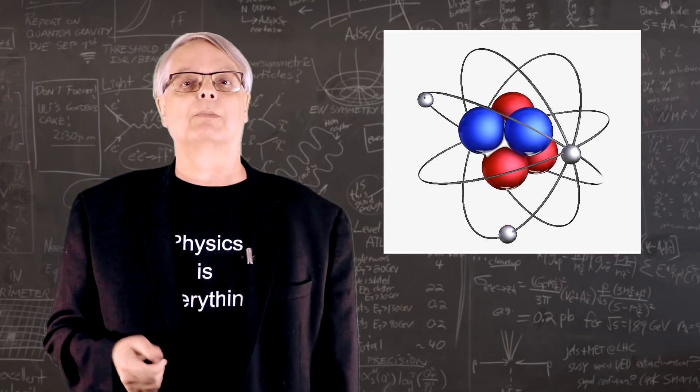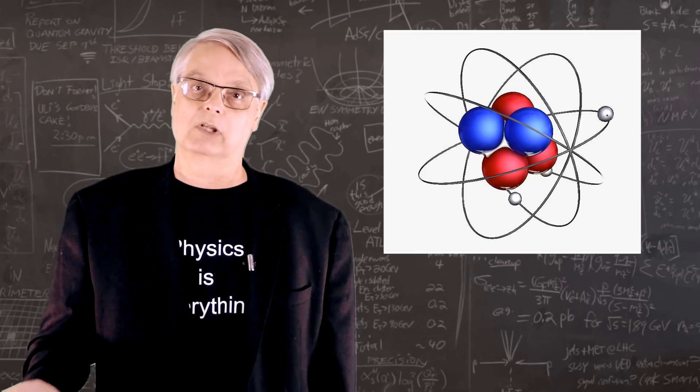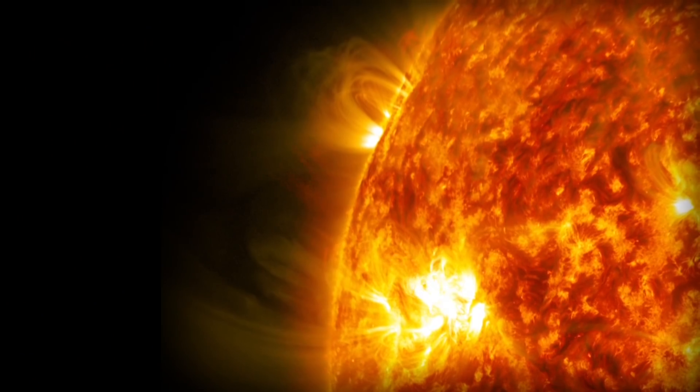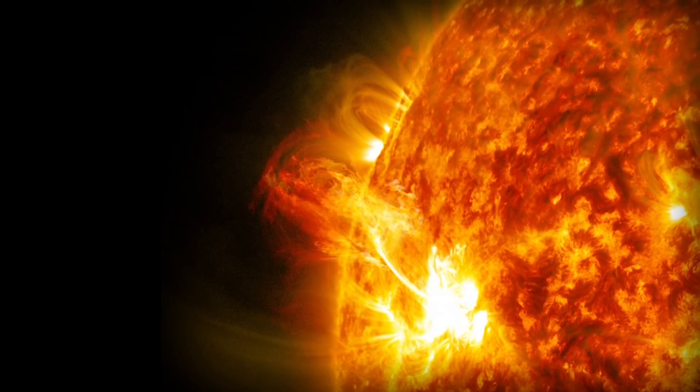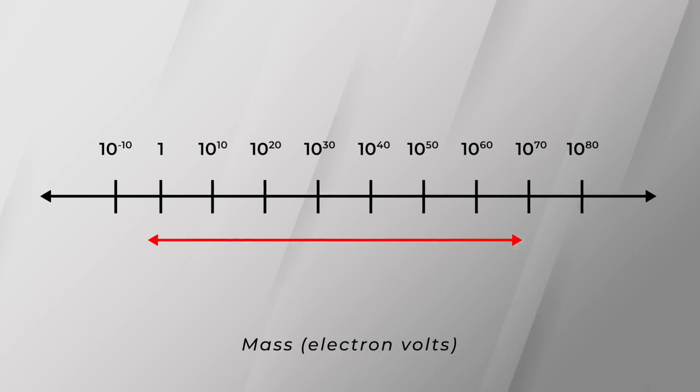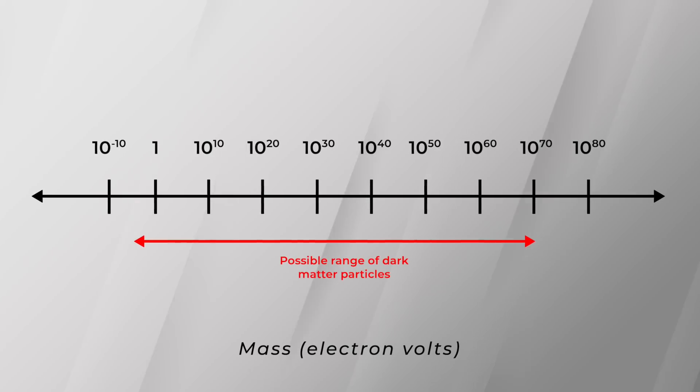If you want numbers, the possible range starts with a mass of about 10 to the minus 6 electron volts on the low end, or about 10 to the minus 71 solar masses, up to a mass of about 1000 solar masses on the high end. That's a ridiculously large range, with a difference from smallest to largest about 10 to the 75th power.